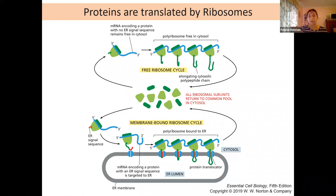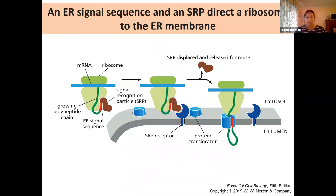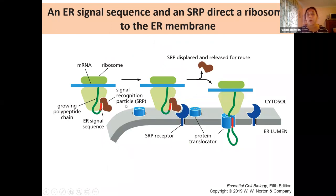The translocator not only recognizes that polypeptide chain as something going in, but also moves it in as it goes. That signal remains bound to the translocator until the entire polypeptide chain has been translated and moved. So how does it do it? Through a specific signal telling it to move in — recognized by a signal recognition particle.